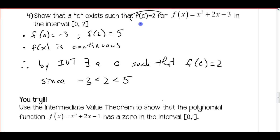So we're looking for a value where f(c) is equal to 2. We can see that our endpoints go from -3 to 5, so somewhere in between there it's got to hit 2. Alright, so pretty straightforward.